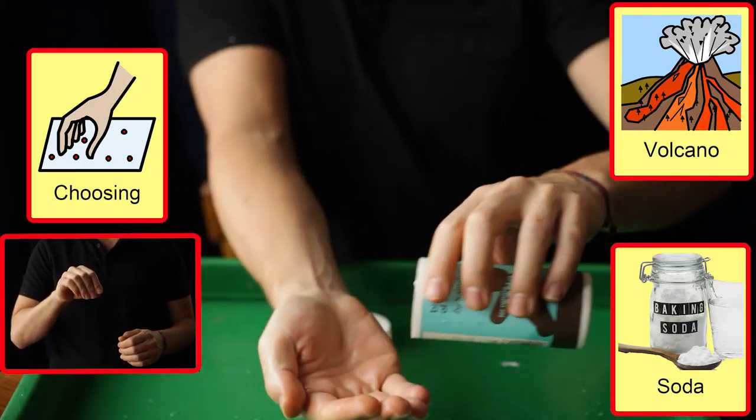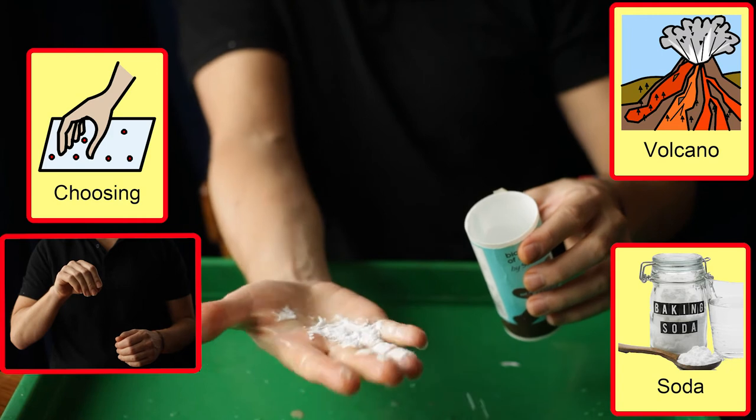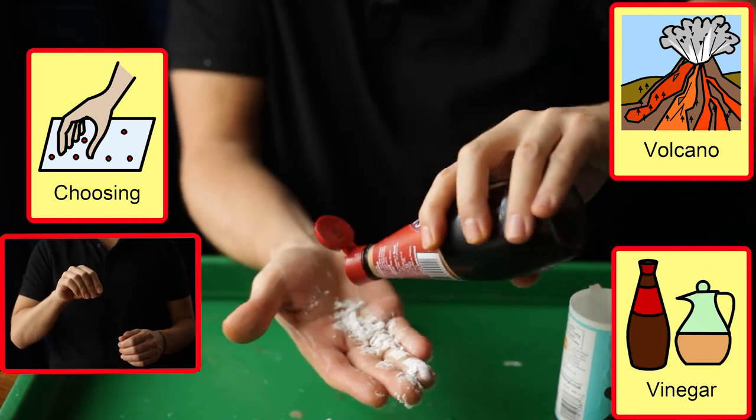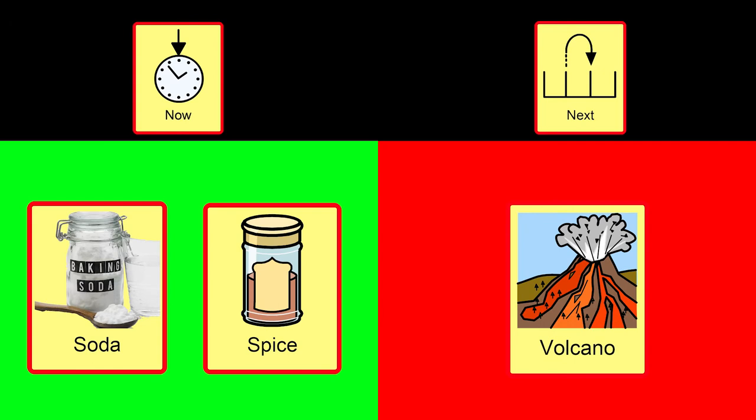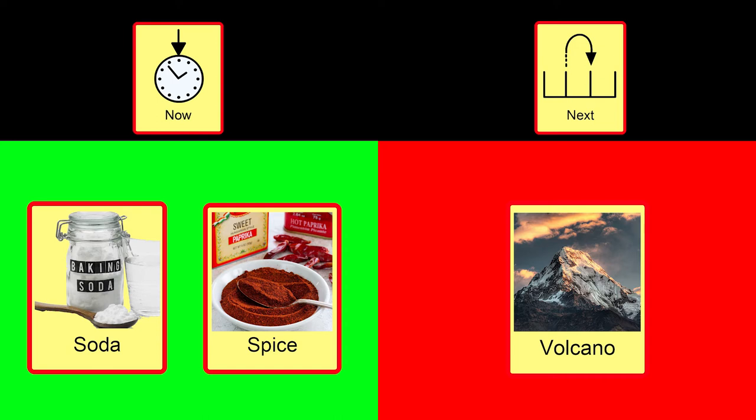A simple volcano opportunity can be presented by showing the interaction between bicarbonate of soda and vinegar or lemon juice. Here we can use a now and next board to help break up the activity, beginning to develop structure and support anticipation for a more motivational activity.